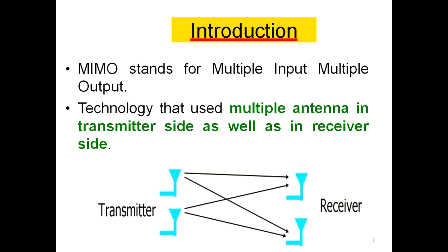That is the concept behind MIMO. The meaning of 'Multiple Input' is where we can connect more than one antenna in the place of a single antenna at the transmitter. That is the meaning for MI — Multiple Input.